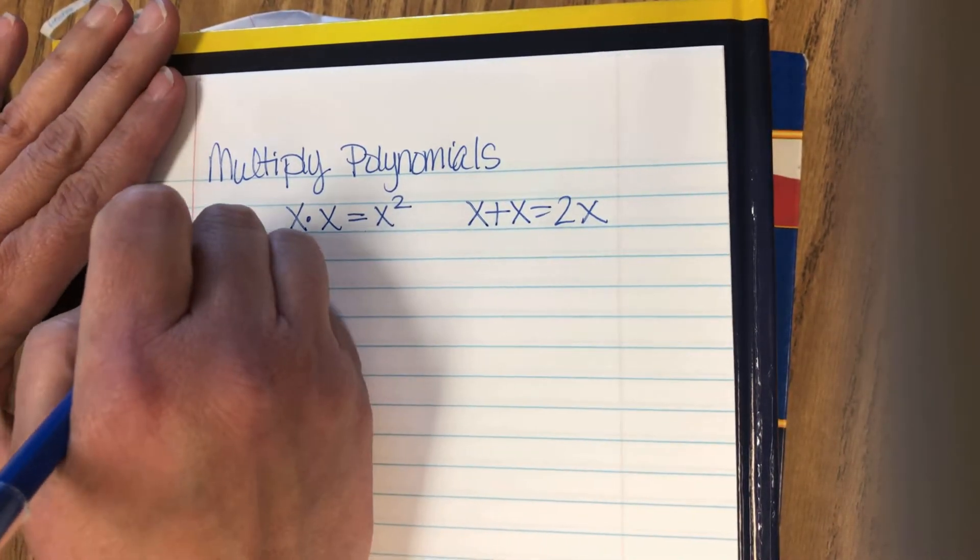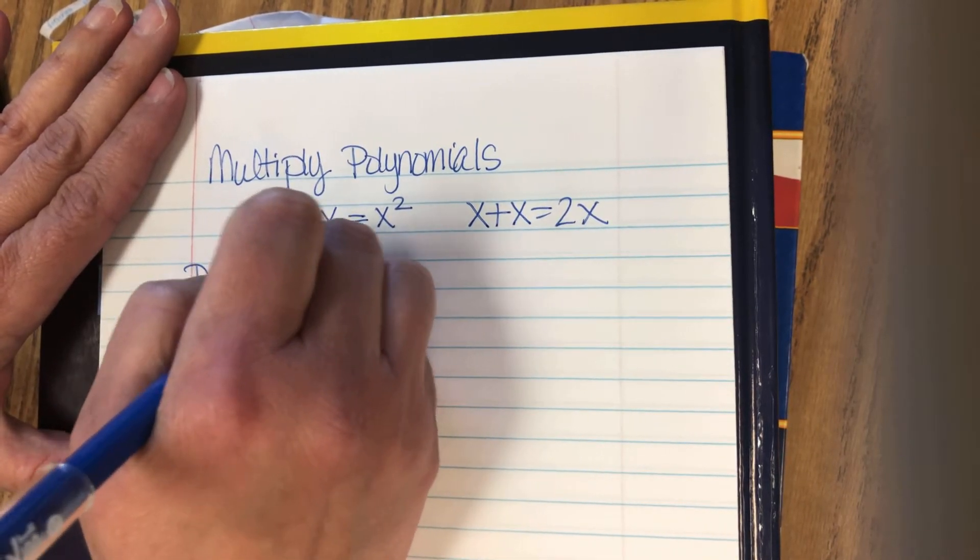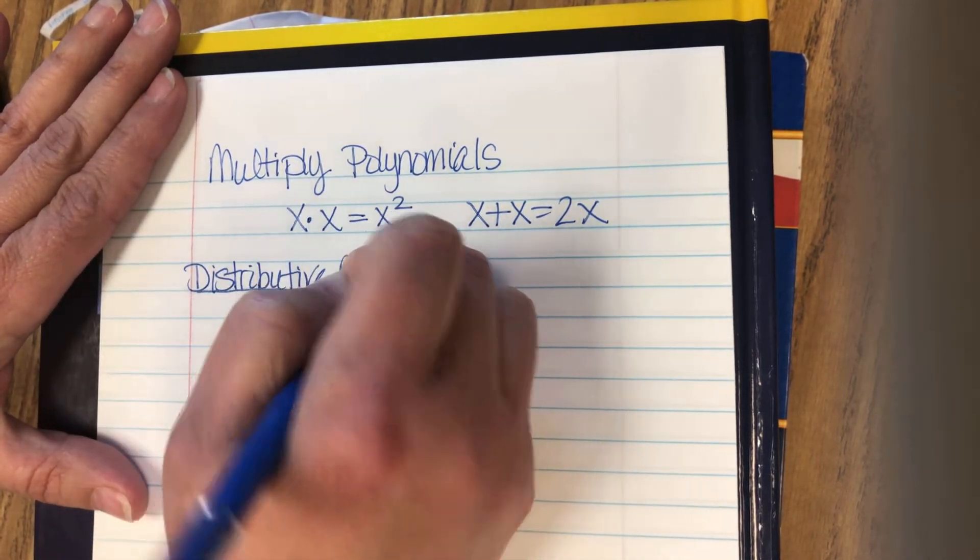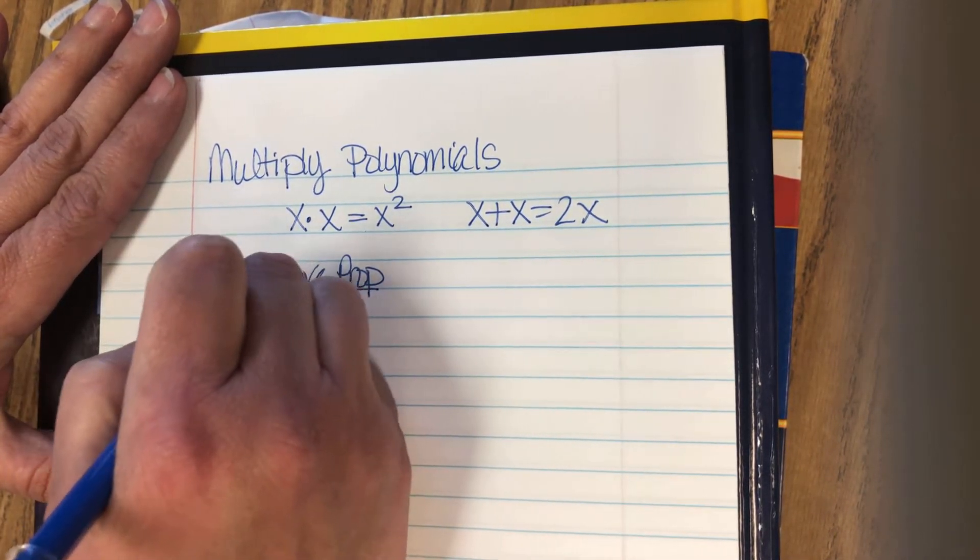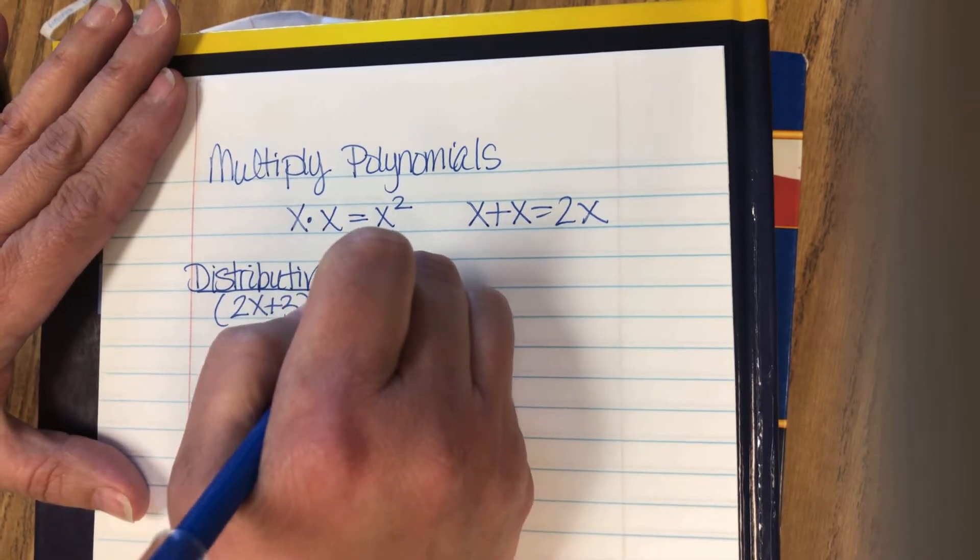So two different methods. First, I'm going to show you just how to do it with the distributive property. So the problem that we're going to do is 2x plus 3 times x minus 4.